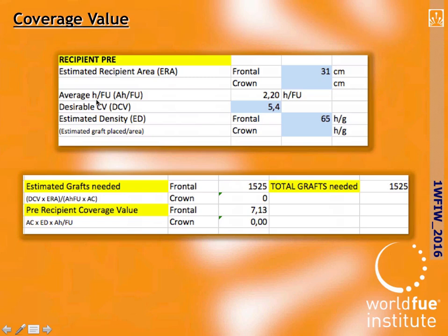In the recipient pre box, with the estimated recipient area that we have measured in the pre-op, we can know the total grafts needed for a particular coverage value. For example, in this case, for a 5.4 coverage value we will need 1,525 grafts. But because we want to place 2,000 grafts to achieve 65 grafts per square centimeter, our pre-recipient coverage value will be 7.13.